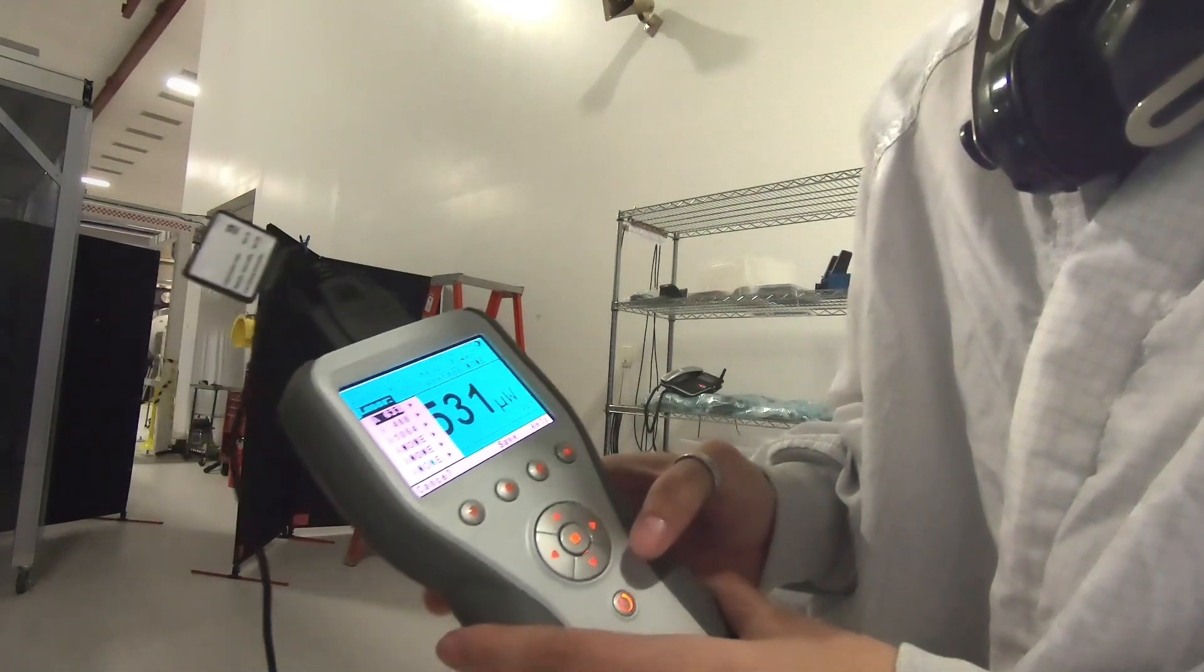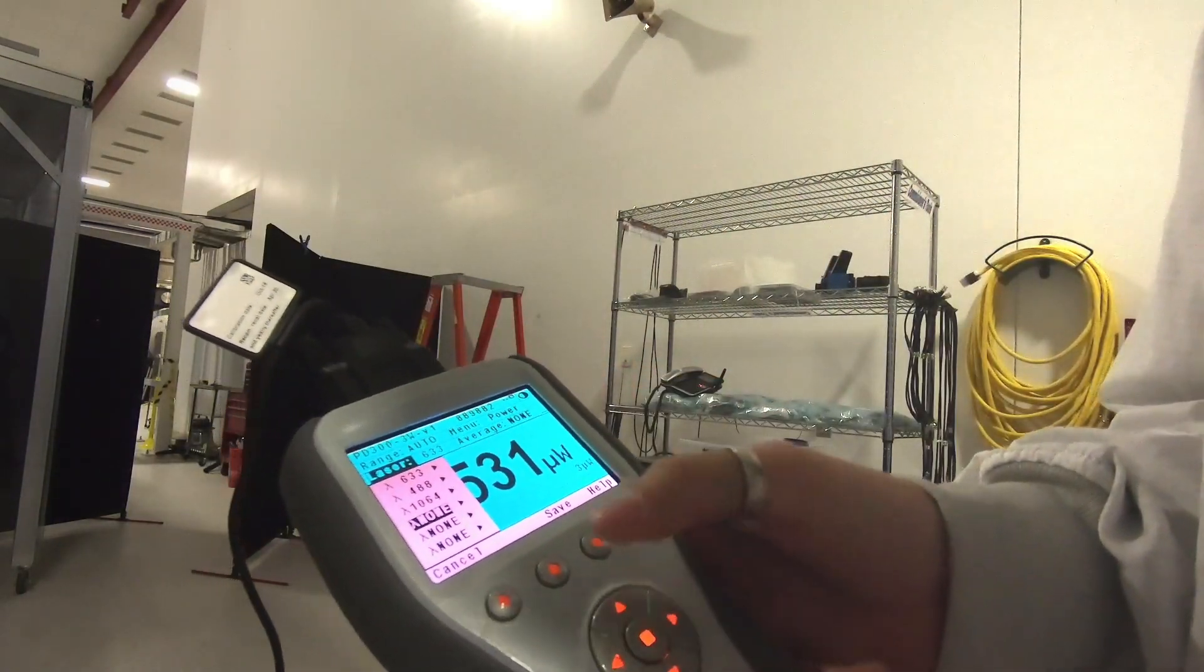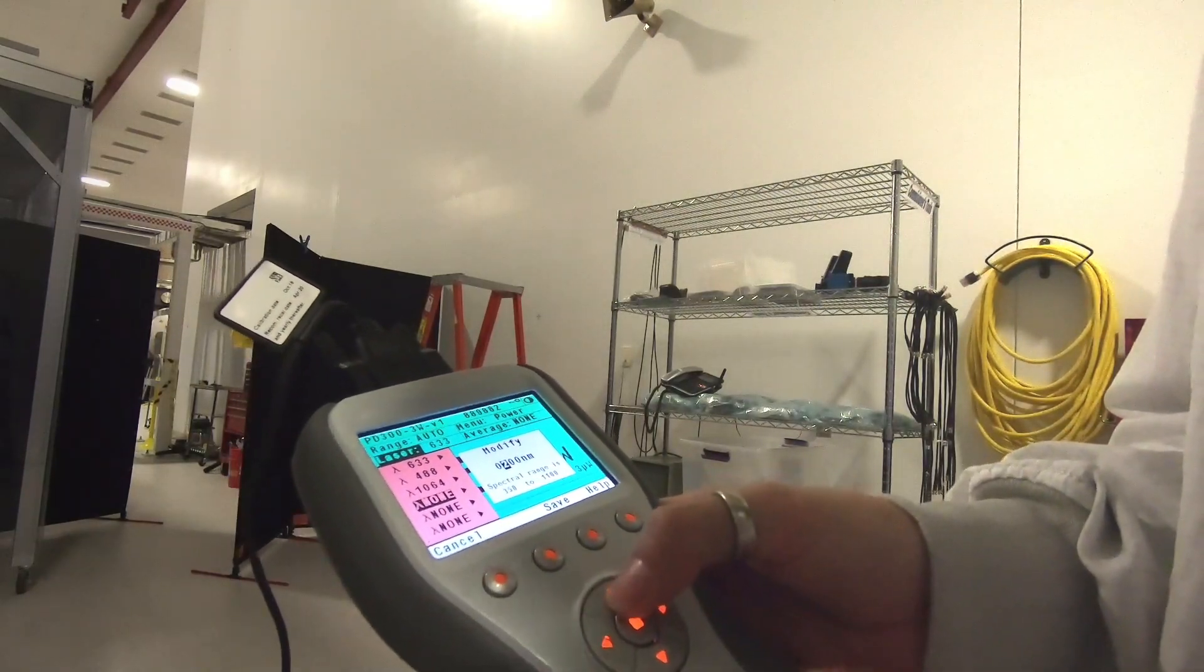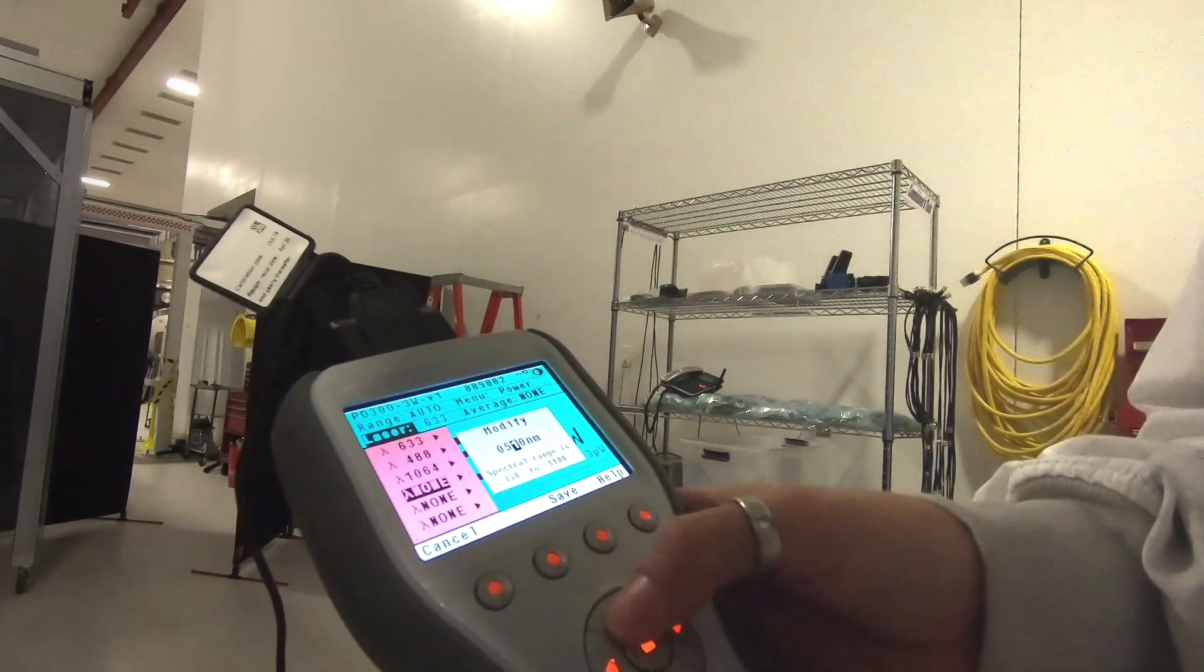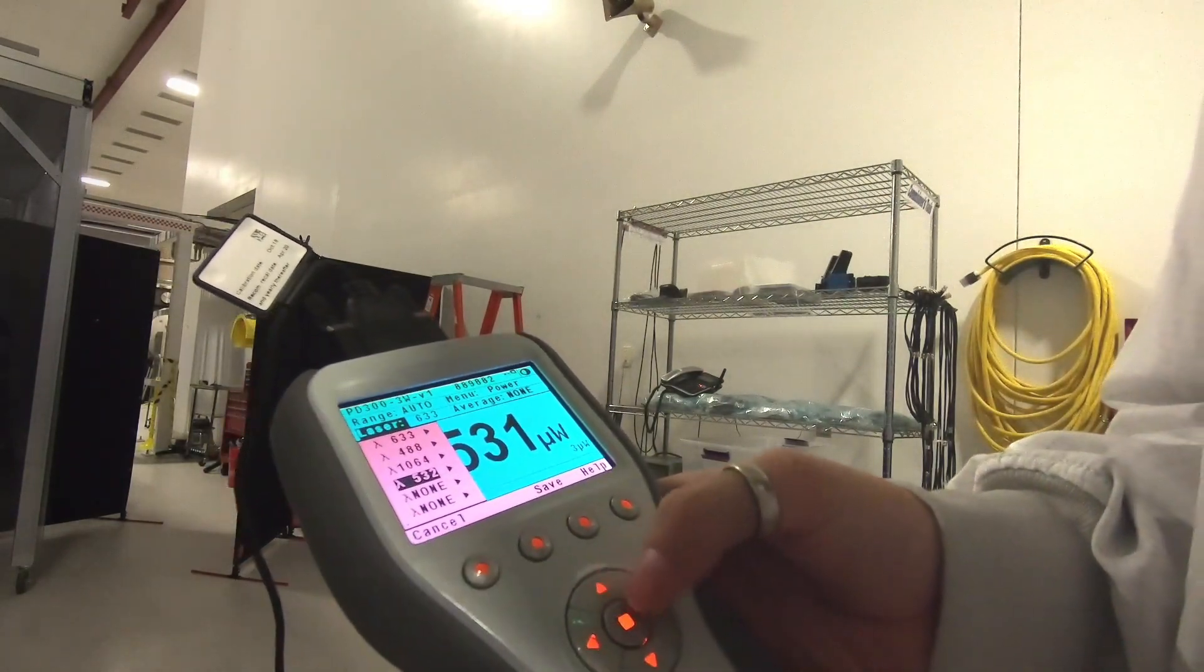The default setting is 633. You can add more. Here's none, let's add this, another one. I want 532, 532 nanometers. Done. Cool.